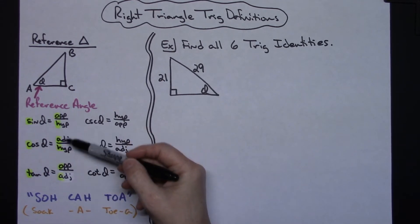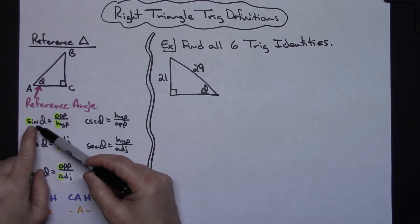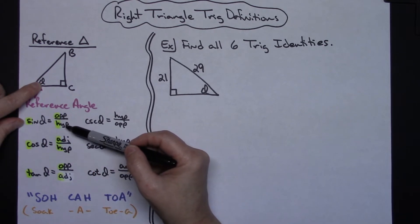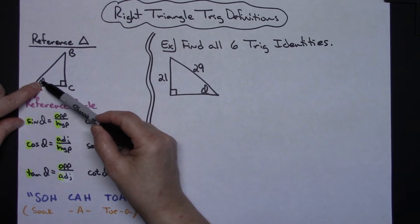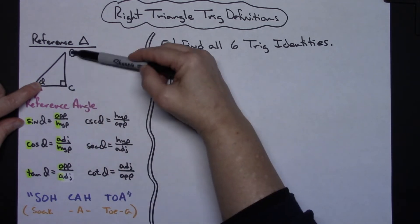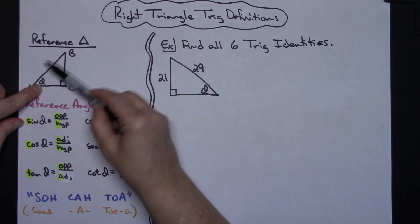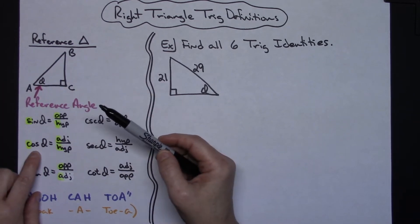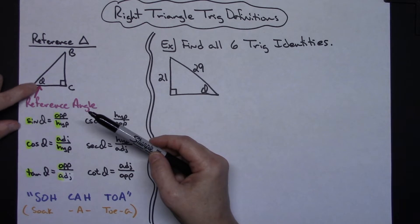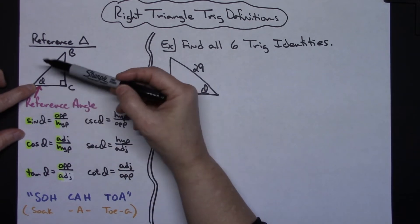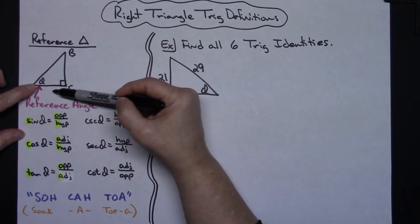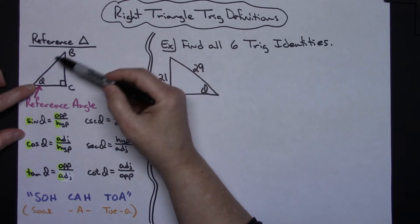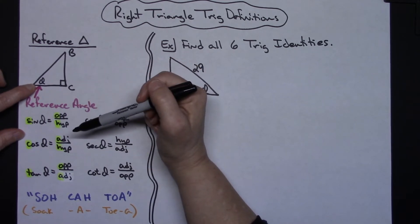Let's take a look at what this opposite, hypotenuse, adjacent thing is. If I want the sine of theta, the formula says opposite over hypotenuse. If this angle is right here, the side opposite would be this side right here, and the hypotenuse of a right triangle is always that side right there — opposite of the reference angle. For cosine theta, it's adjacent over hypotenuse; adjacent would be the side right next to your reference angle, over hypotenuse.